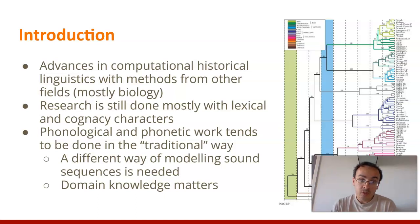Advances in computational historical linguistics have been rather big in the last few years, mostly with methods from biology, but research is still done almost exclusively with lexical and cognizant characters and not with phonology, as in traditional historical linguistics. This is mostly because we still need a different way of modeling sound sequences, because the analogies with biology don't really hold, and the fact that domain knowledge really matters a lot.